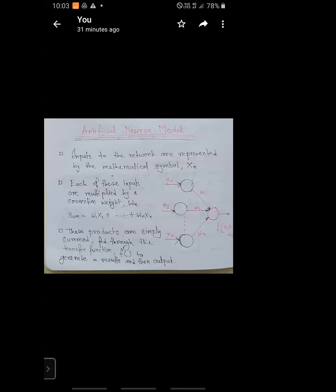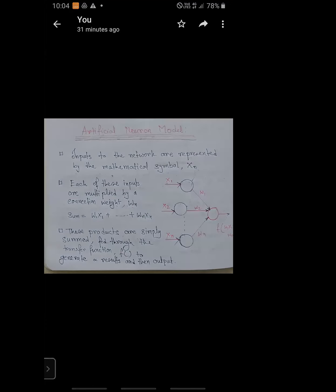Each of these inputs are multiplied by a connection weight, just like w1, w2, and up to wn. And the sum equals w1·x1 plus w2·x2, and in this way we can increase up to wn·xn. This is the network weightage model.